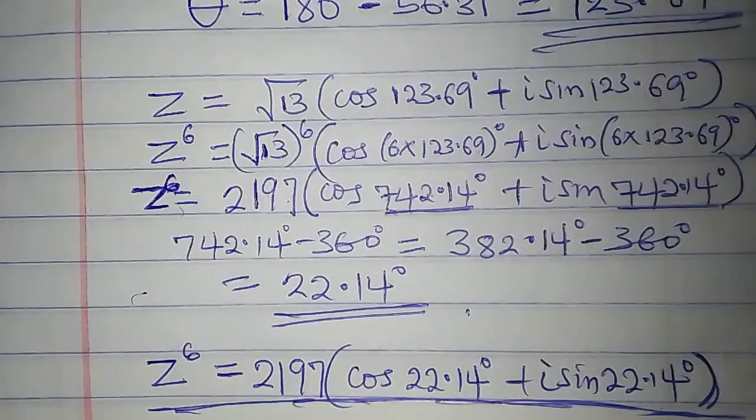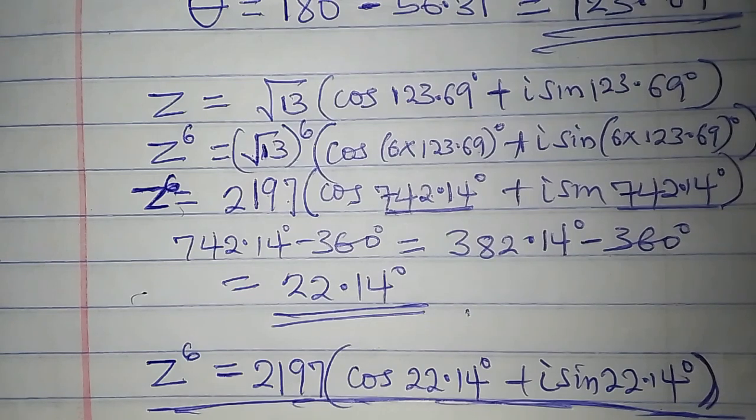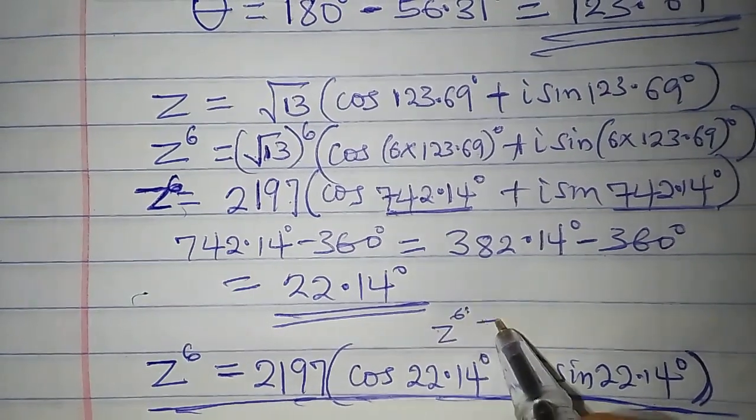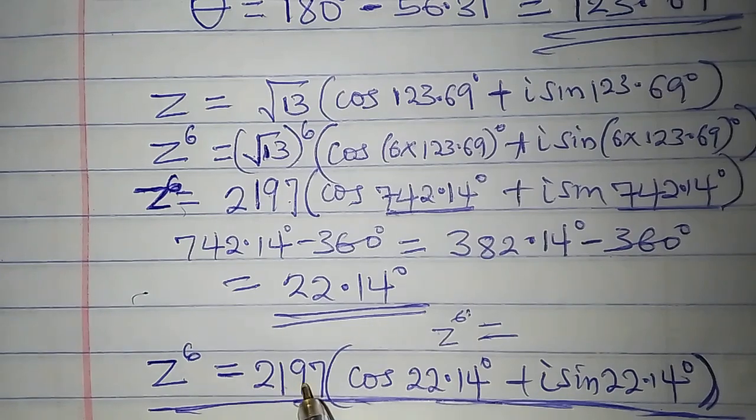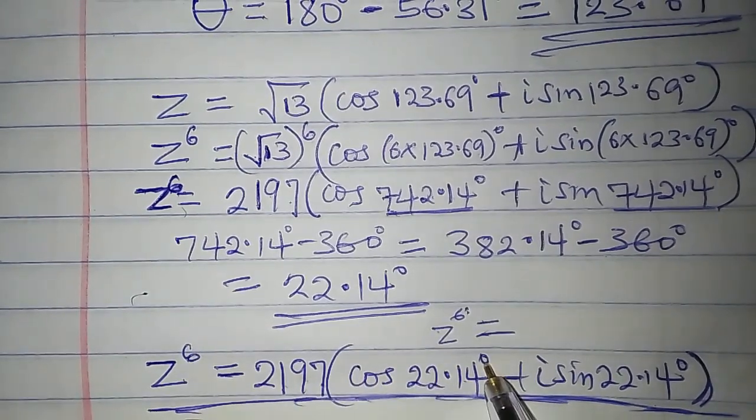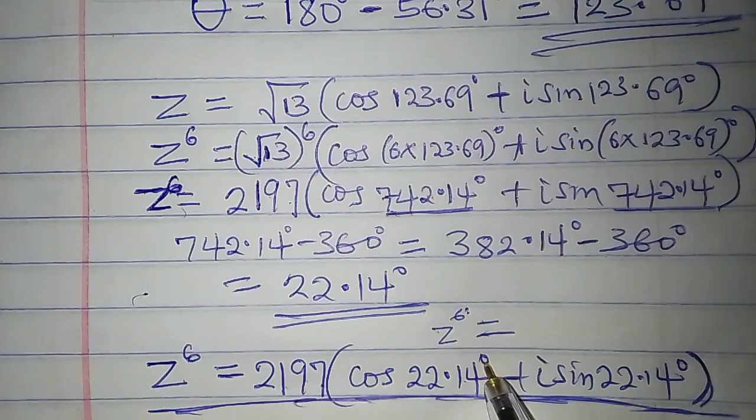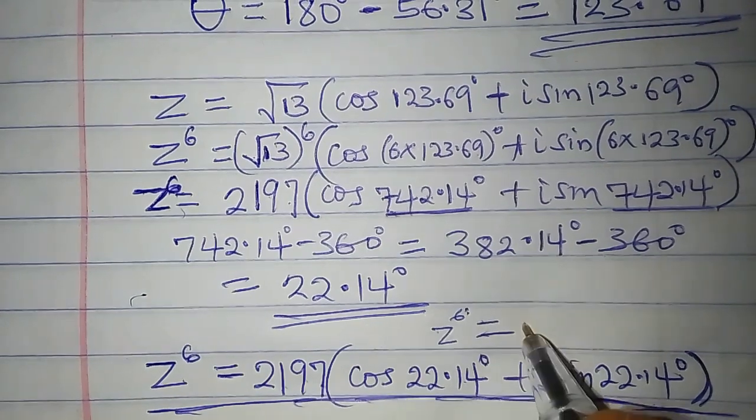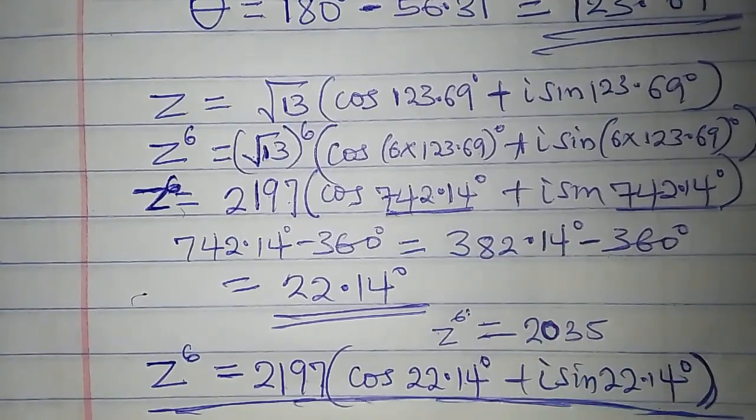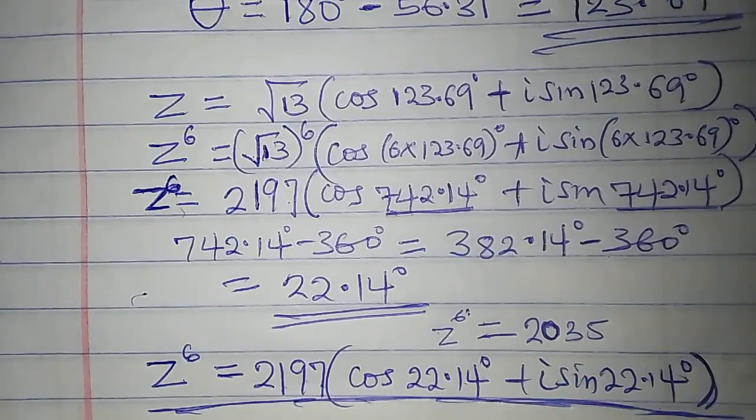If we still decide to take this result to rectangular form, it's still possible. Z to the power of 6 in rectangular form will be 2197 times cos 22.14 degrees, which is 2035 to the nearest whole number.